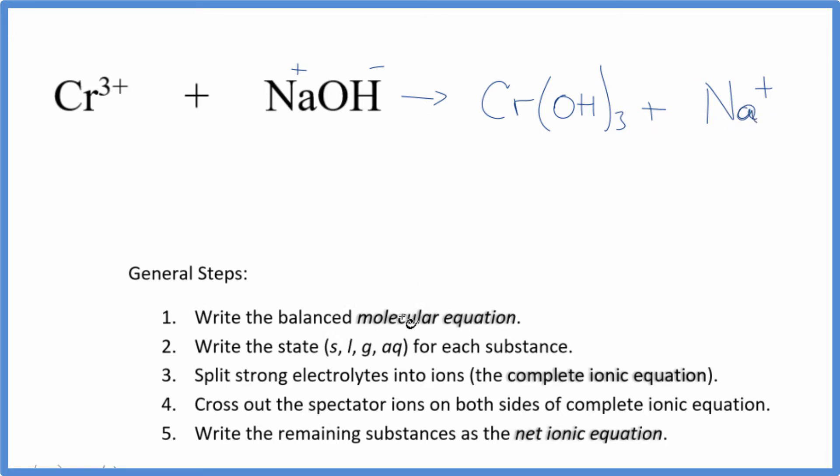When we do net ionic equations, we need to balance the molecular equation, balance the number of atoms on each side. I can see I have three of these hydroxides here, so I'm going to put a three in front of the sodium hydroxide. Now I have three hydroxides, but I have three sodium ions, so I'm going to put a three here, and we'll balance the molecular equation.